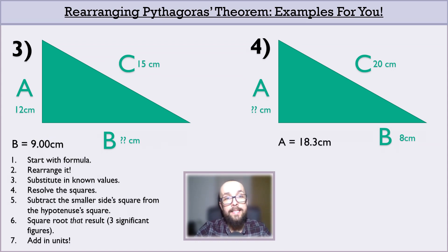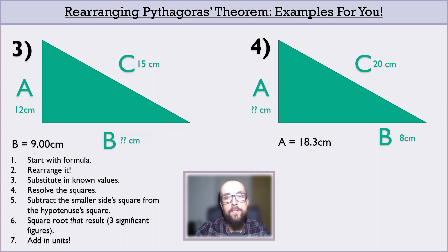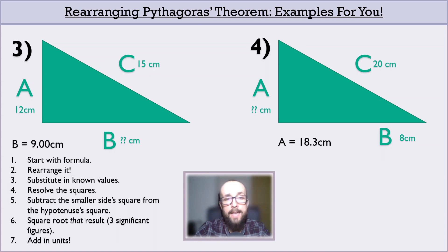The answer for question 4 is 18.3 centimetres — well done if you got that. The workings: A squared plus B squared equals C squared, rearranged to A squared equals C squared minus B squared. Substituting in known values gives A squared equals 20 squared minus 8 squared, or 400 minus 64 once you resolve those squares, which equals 336. So A must be the square root of 336, which is 18.3303... or 18.3 to three significant figures. Once we add in those units, A equals 18.3 centimetres.